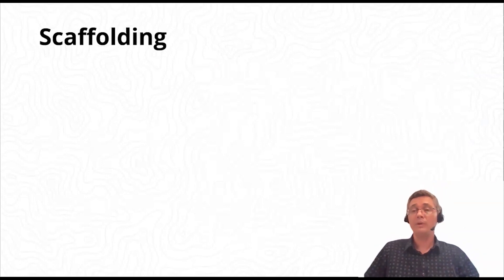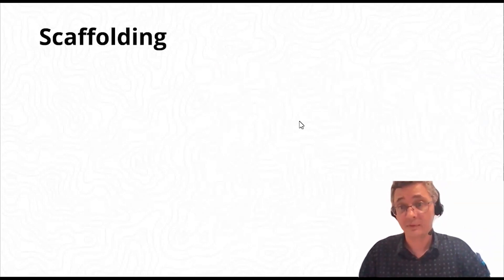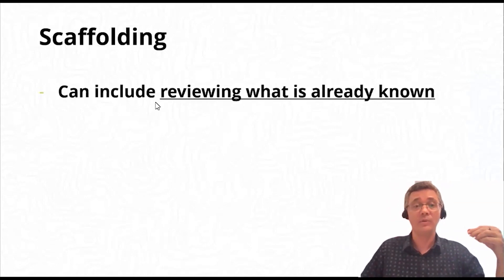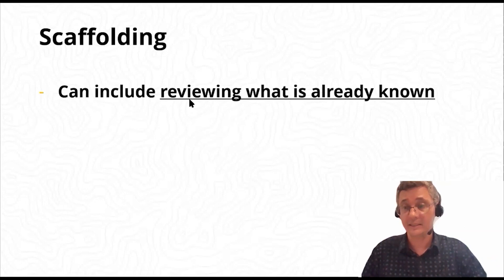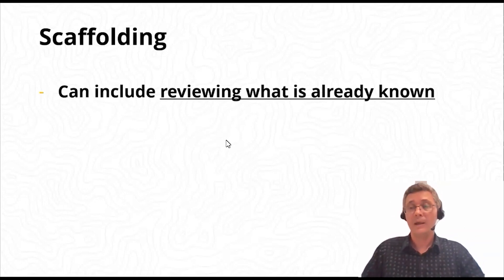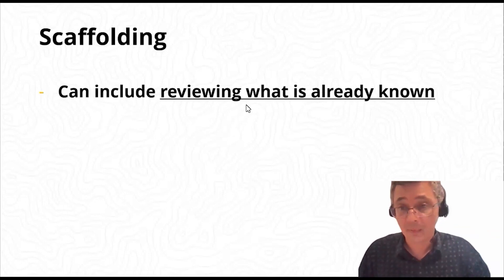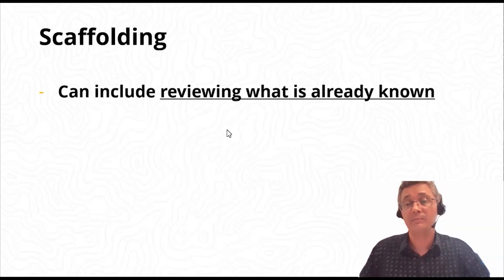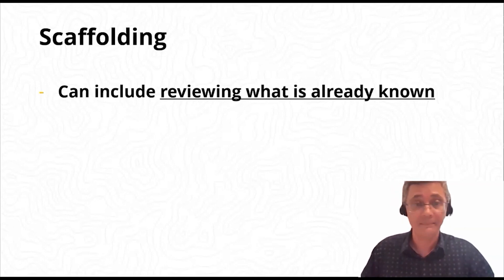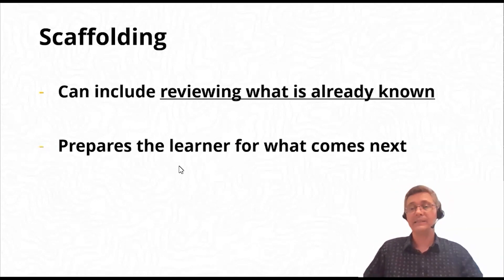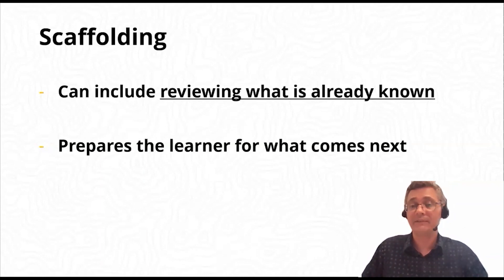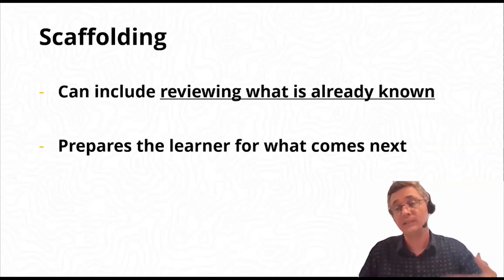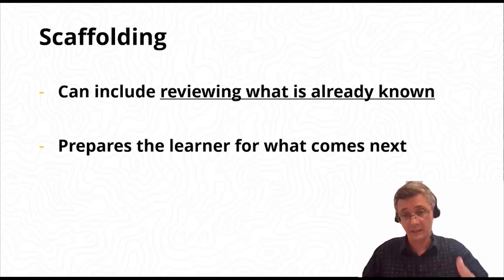Here are two types of scaffolding. Scaffolding can include reviewing what is already known and building on this, as we discussed in the spiral curriculum. Students need to meet language many times before they're able to use it correctly. And secondly, scaffolding prepares the learner for what comes next — it gets students ready for and supports them for the upcoming task.